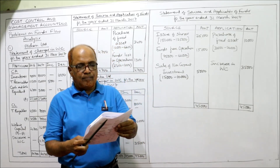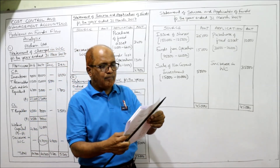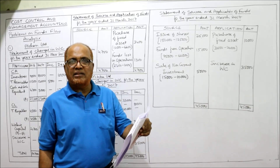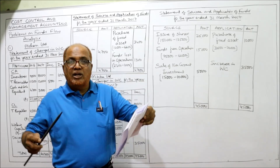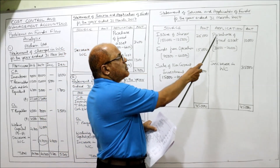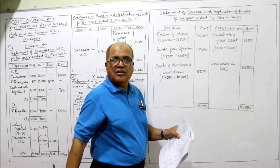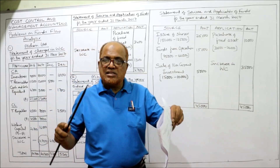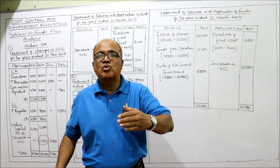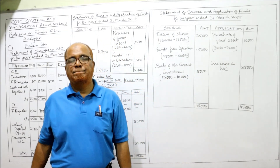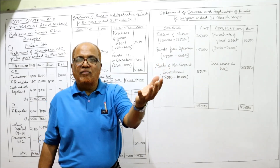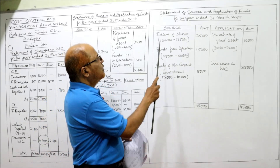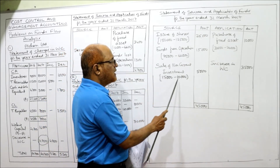Non-current liabilities are not given. Current liabilities already taken in working capital. Fixed assets: last year 20,000, current year 30,000 — increase due to purchase of fixed assets, so application side: 30,000 minus 20,000 equals 10,000. Non-current investment: last year 15,000, current year 10,000 — investments have decreased. Some investments were sold during the year. When we sell investments, we receive cash — that is a source. Sale of non-current investment: 15,000 minus 10,000 equals 5,000.